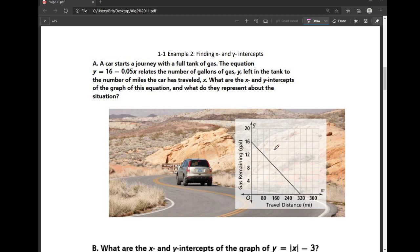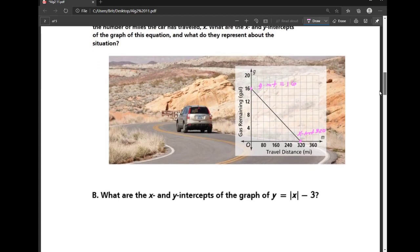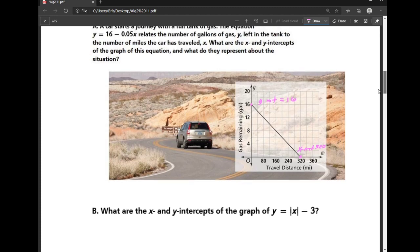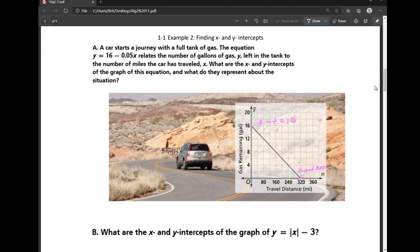So looking graphically, okay, an intercept is where it's crossing the axis. So it would appear that there's a y-intercept at 16. And then it would appear that there's an x-intercept at 320. So if you have the graph of the function, it's often pretty easy to identify those.